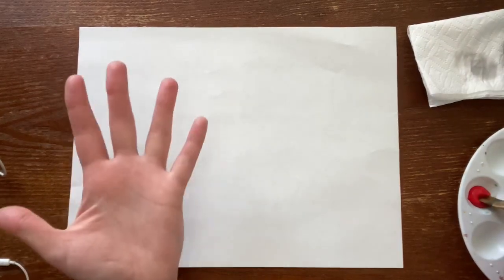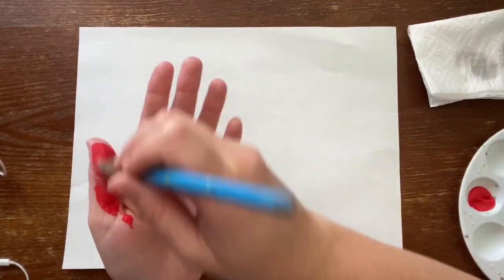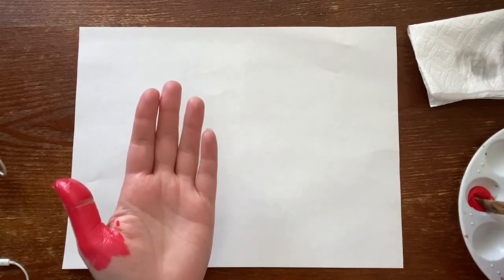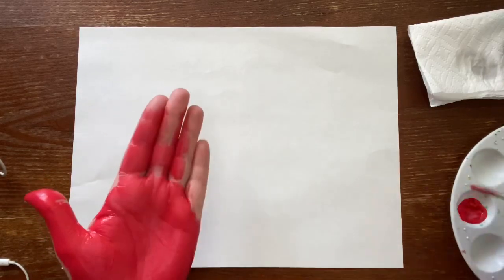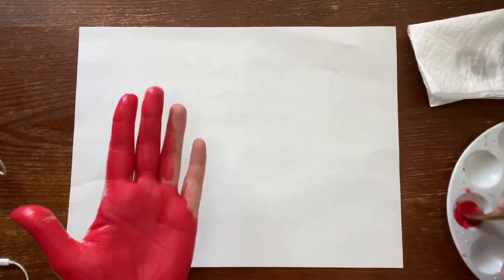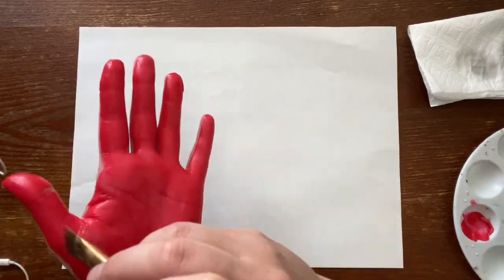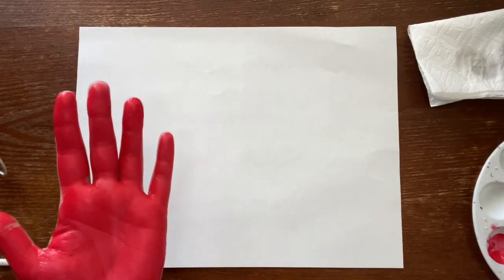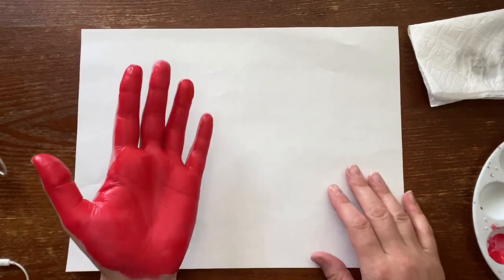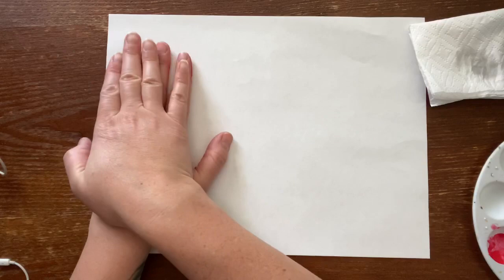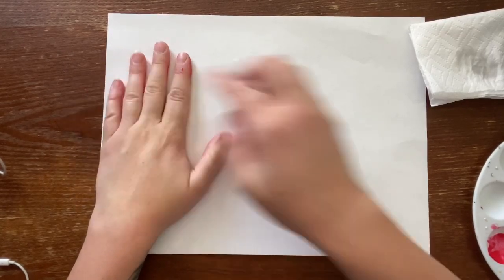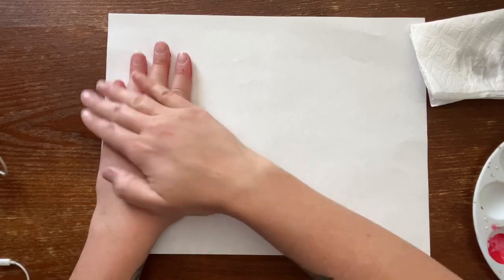Alright, so I have my paper ready and I'm going to get my paint brush and dip it in the red paint and have my hand ready. So you're going to cover your whole entire hand with the paint. Alright, so now that I have my hand painted, I'm going to go ahead and put it onto the paper right about here. You want it on the edge of the paper because on this side we're going to be drawing his shell.